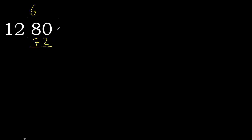Subtract: 80 minus 72 is 8. There is no next number, therefore complete. Always complete with 0, here with a point. 0 point.